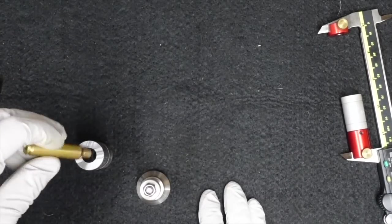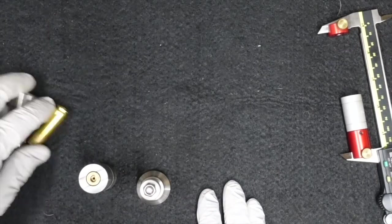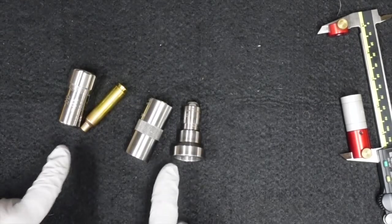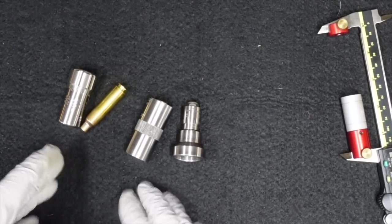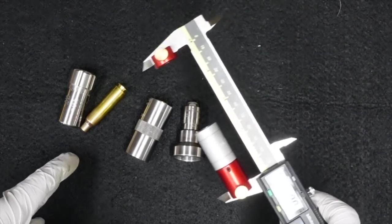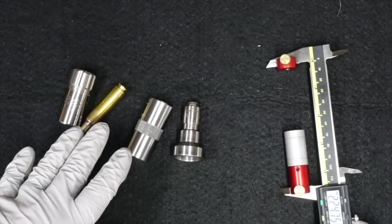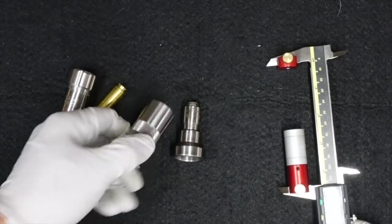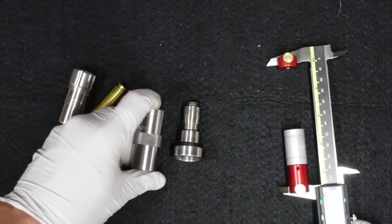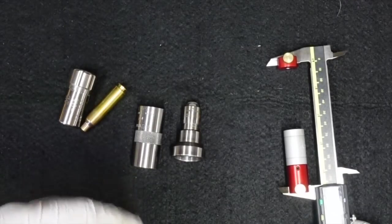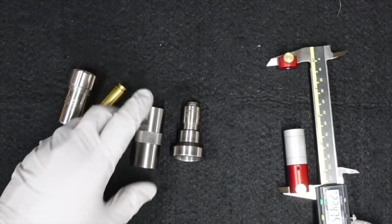It comes down to ease of use and repeatability. For me, the case gauges, whether it's the Wilson or this, I personally just find that I get better repeatability using one of the case gauge versions over the calipers. Mainly because they really are caliber and in some cases chamber specific. Like this particular one I could easily have reamed out to my actual chamber, which would then make me feel even more confident in the shoulder bump.